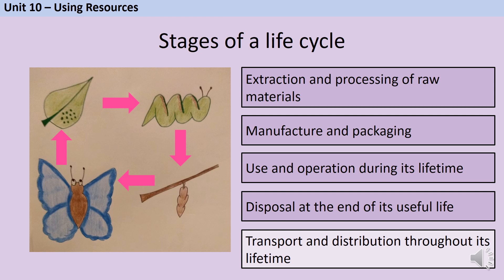There are four main stages to a life cycle assessment, and running through all four of those stages we have transport and distribution, because it's going to be relevant at each one. We start with the extraction and processing of the raw materials.